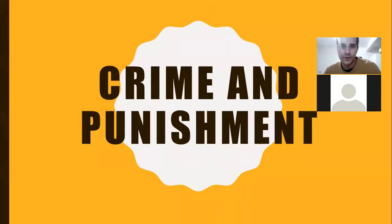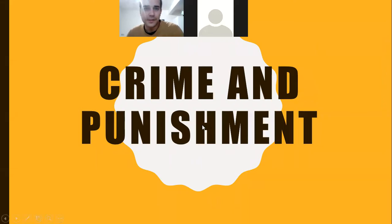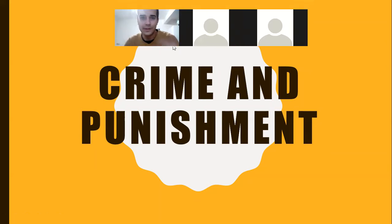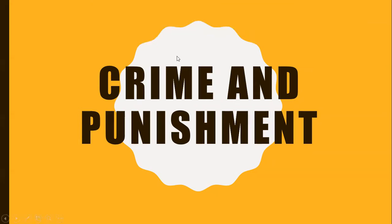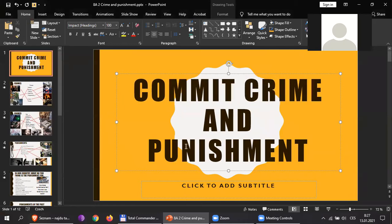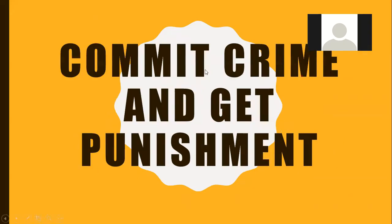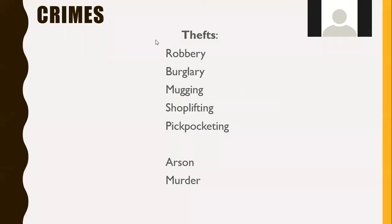Welcome everyone. Today we will discuss crime and punishment. Can you tell me what punishment is? So when do people get punished? When they commit a crime. Yes — we don't say 'do crime,' we say 'commit a crime.' I'll write it here: commit a crime and get punishment. We use 'commit' because crime is a bad thing.